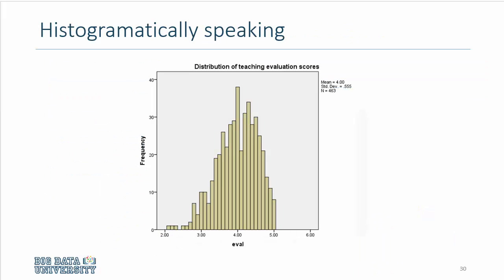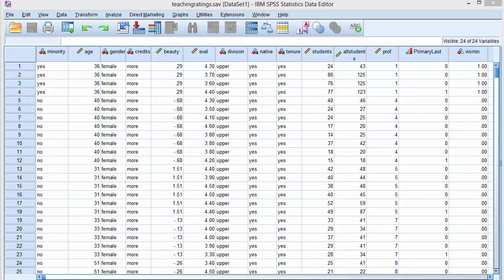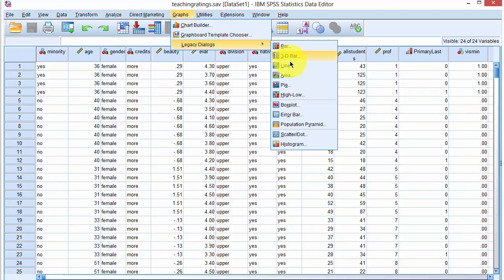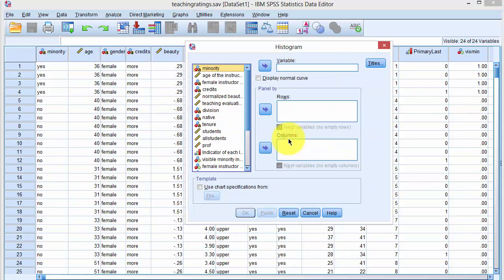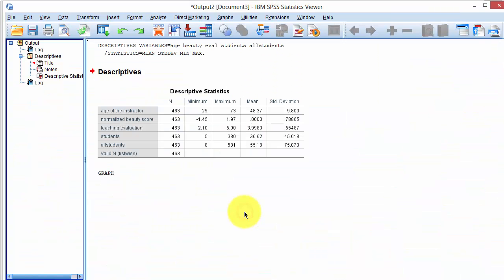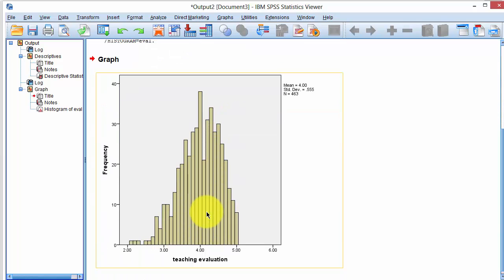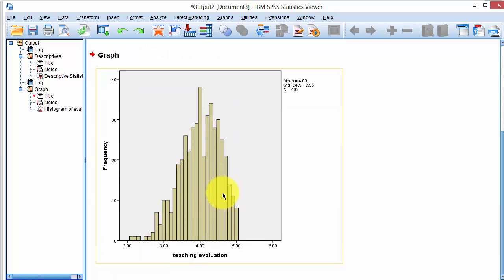We can also plot the variance using histogram in SPSS. So, let's say we want to do this, we return to our data set, click on graphs, we have several choices, let's say we use a legacy dialog box and say histogram, select the variable which is the teaching evaluation score, and then say OK, and the output comes out here. Now, you can see it's similar to the one that we've got in our slides.